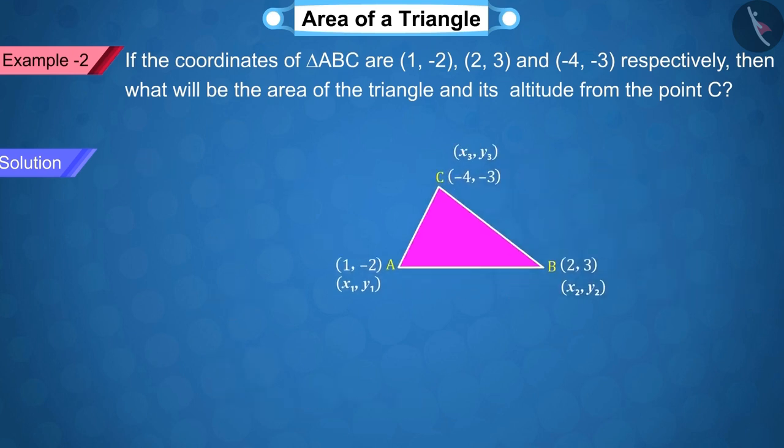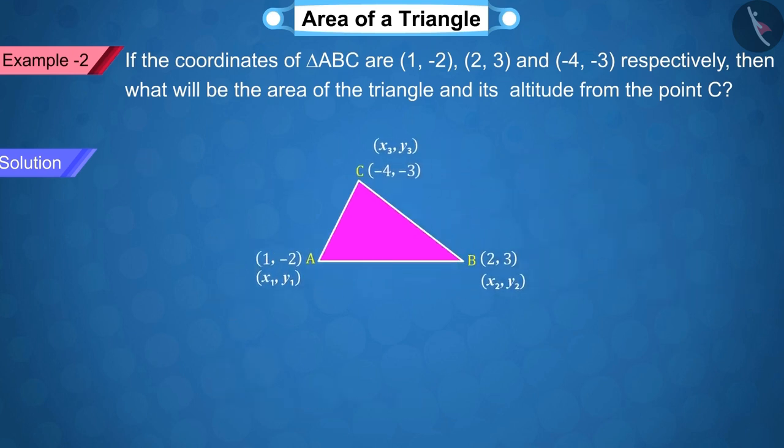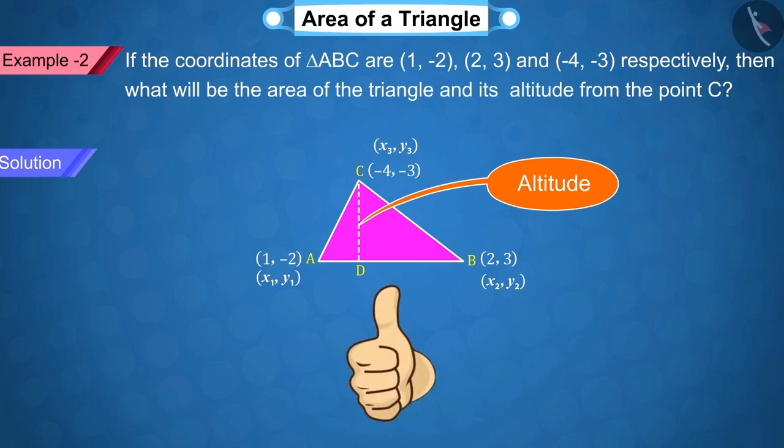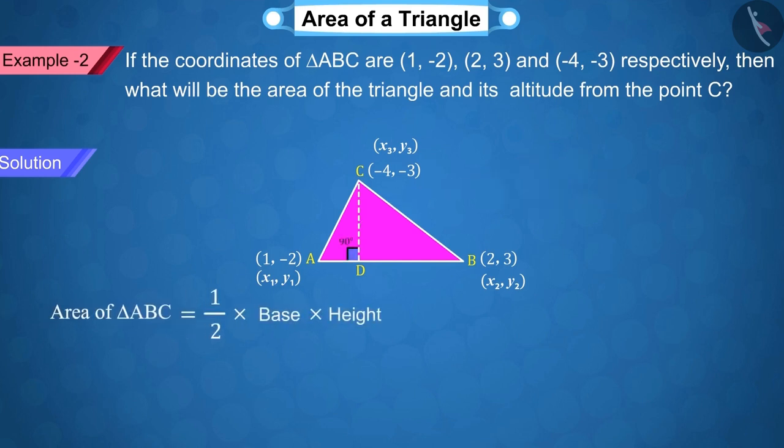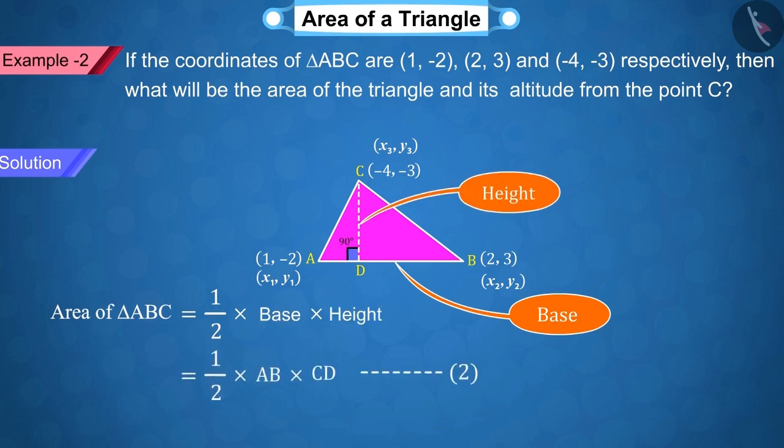Now, can you guess how will we find the height, that is, the altitude of this triangle? Very good! We know that the altitude of a triangle makes an angle of 90 degrees with the base. Then, the area of the triangle is 1 by 2 multiply base multiply height, which is represented by equation 2.